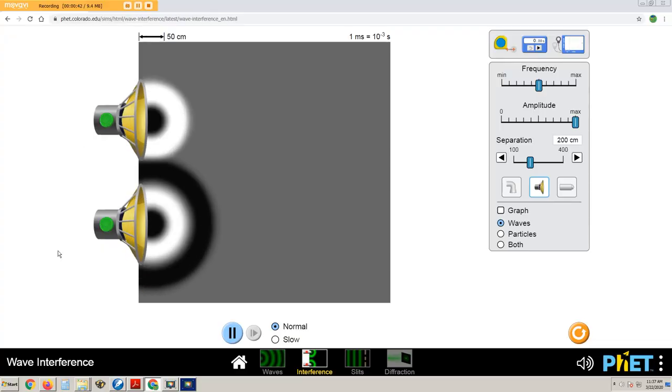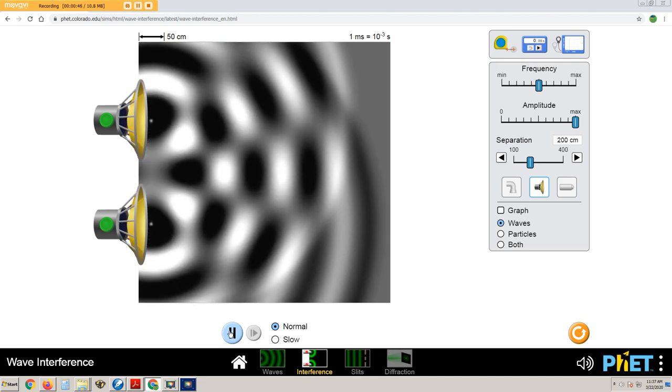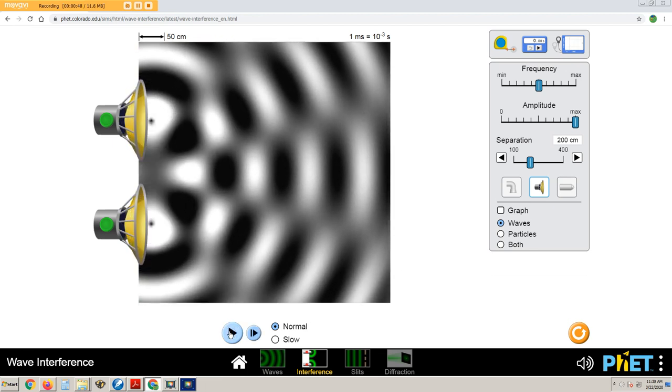These two speakers emit sound waves. At some locations, the path difference results in loud spots. Along this line, the sum results in quiet spots.